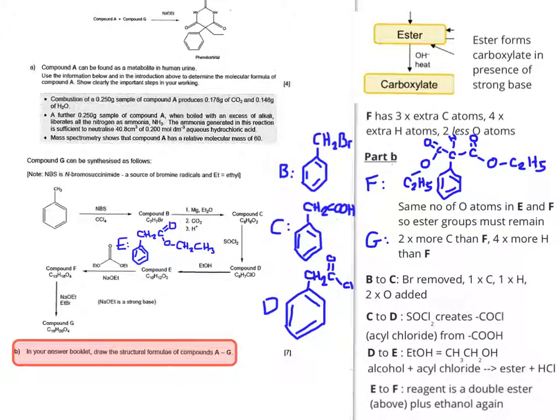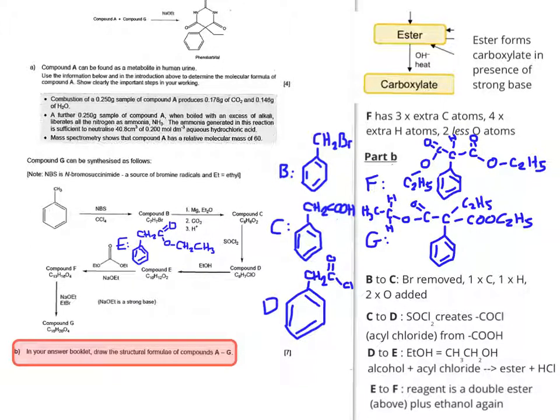If you look carefully in between the two ester groups on the carbon that comes off the benzene ring you have a hydrogen. If we're trying to add two more carbons and four more hydrogens than F that means we've got to take a hydrogen off. If we take a hydrogen off that allows us to put on a C2H5 like that.